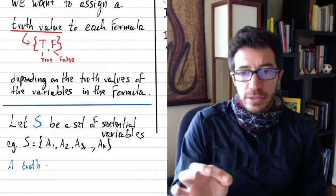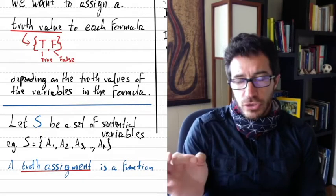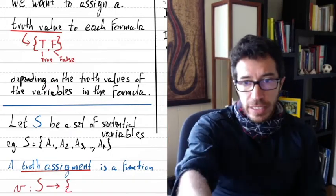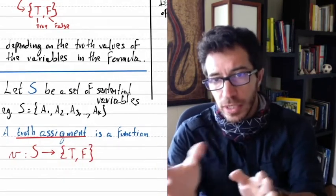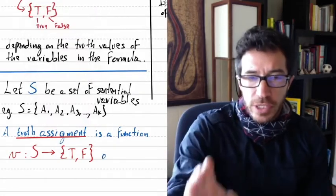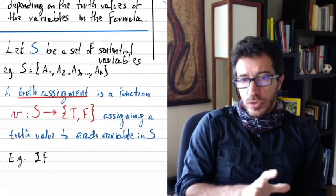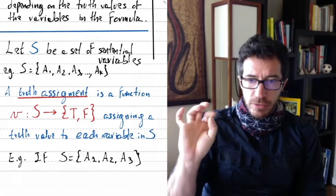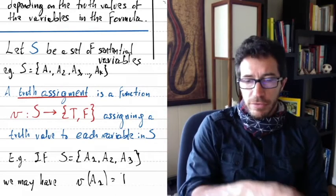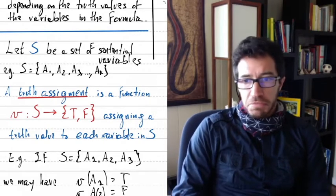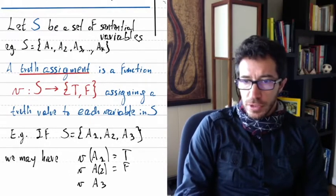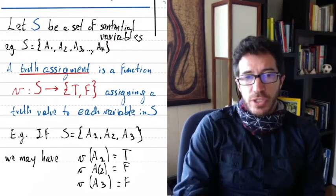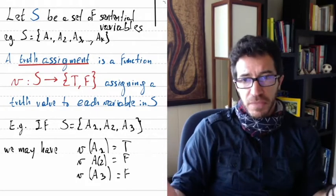We define a truth assignment for S as a function that assigns to each variable symbol in the set S a truth value. It's a function that goes from S — taking values from a1, a2, ..., a_k — and assigns to each of those a truth value, T or F. For example, suppose S consists of three variable symbols: a1, a2, and a3. We may have v(a1) = True, v(a2) = False, and v(a3) = False. So we assign a truth value to each variable.